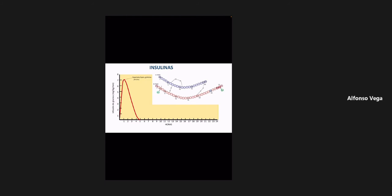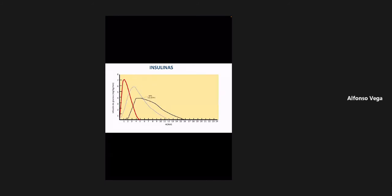La glulicina tiene dos tipos de modificaciones: la sustitución de lisina en la posición 3 de la cadena beta y la sustitución de lisina en la posición 29 por ácido glutámico, por eso se llama glulicina. Estas tres insulinas tienen la característica de un inicio de acción muy rápido y una vida media muy corta, con un promedio de 4 a 6 horas, y sirven principalmente para los picos de insulina.